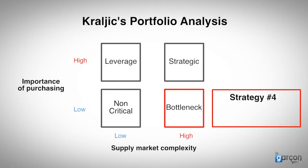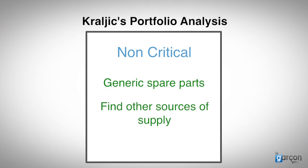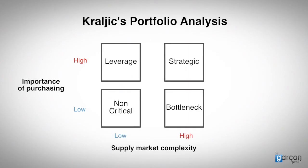Strategy four might be to change the positioning of the category by moving it to another quadrant — in this case, non-critical. We would have to explore the use of generic spare parts or find other sources of supply in order to reduce our risk. In reality, the opposite is more often the case: what should be a non-critical category ends up being a bottleneck category because of specifications that create a de facto monopoly.